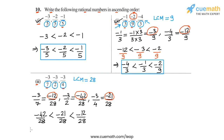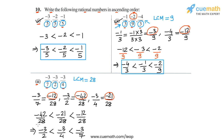Writing them in their original form: minus 42 by 28 was minus 3 by 2, minus 21 by 28 was minus 3 by 4, and minus 12 by 28 was minus 3 by 7. So in part 3, this is the arrangement of the three rational numbers in ascending order: minus 3 by 2 is less than minus 3 by 4 is less than minus 3 by 7.